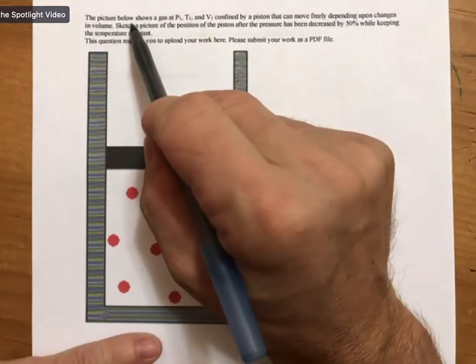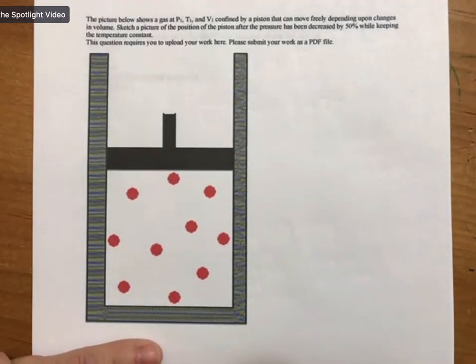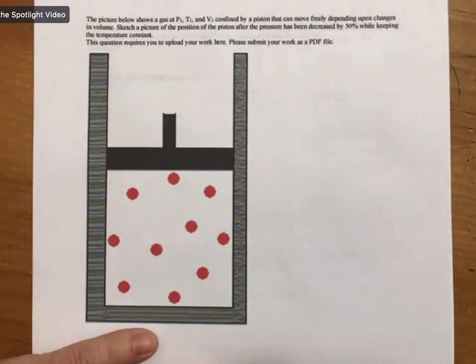So the picture below shows a gas at P1, T1 and V1 confined by a piston that can move freely depending upon changes in volume. Sketch a picture of the piston, of the position of the piston after the pressure has been decreased by 50% while keeping the temperature constant.